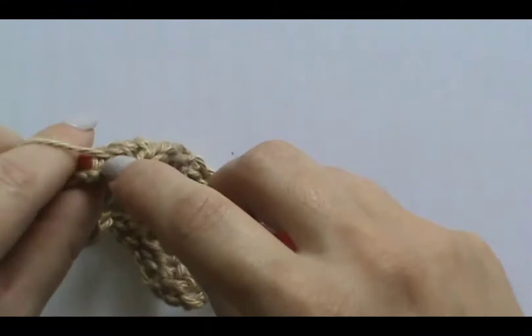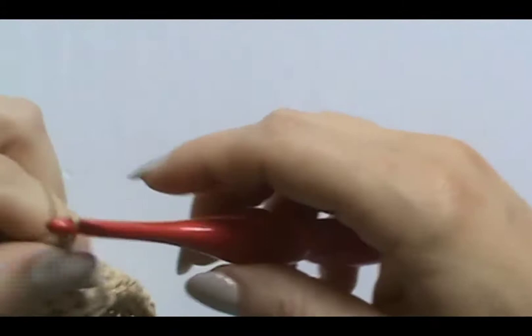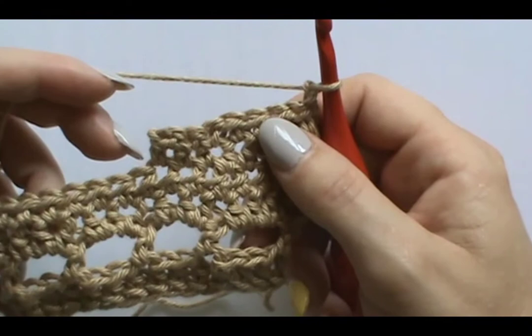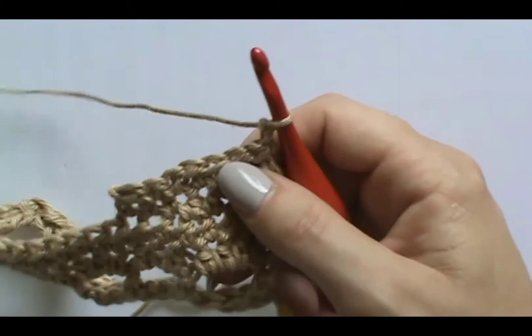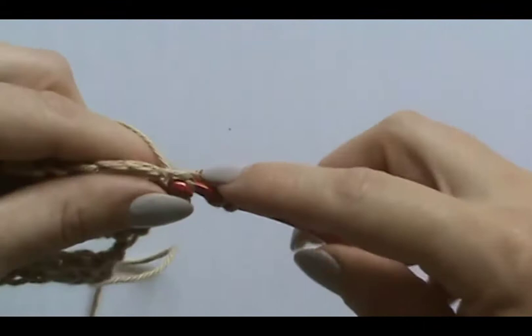Again, depending on the size you make, your amount is going to be different, but it's the same concept. Now we're going to chain two and turn. We need to match up our short row to the rest of the row, but if we just went from this stitch to this stitch, it would leave a big gap. So instead we are going to close that gap up with a linked stitch.